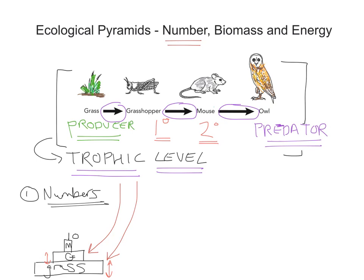You could use a linear scale or a log scale, but by proportional I mean that if there were a thousand shards of grass eaten by 100 grasshoppers, then the bar for grass should be ten times bigger than that for the grasshopper. To complete the pyramid of numbers, we add the actual numbers. Let's say there are a thousand grass, 100 grasshoppers, ten mice, and one owl. It shows you the numbers of organisms at each trophic level.